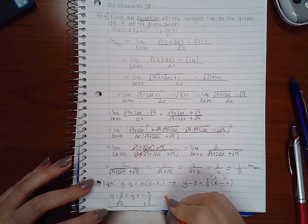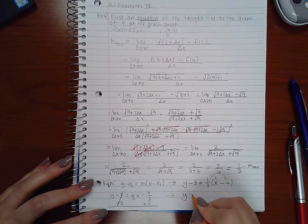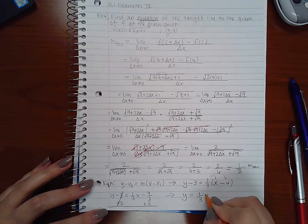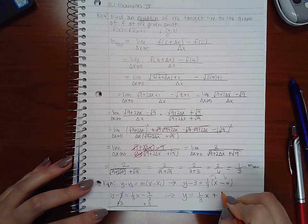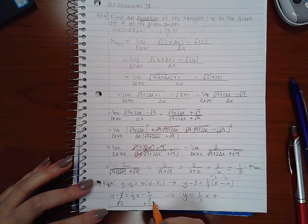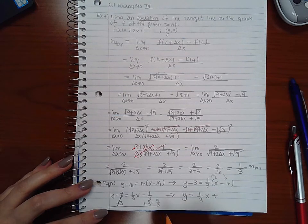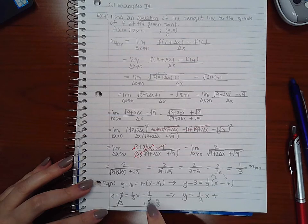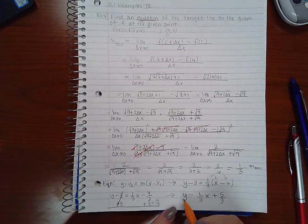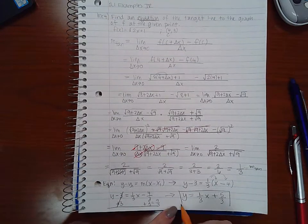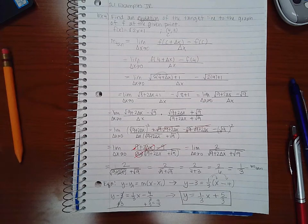Leaving me with y equals one third x plus... three is the same as nine over three, and it's positive nine over three, so that will leave me with positive five thirds. And this is the equation of the tangent line that we were looking for.